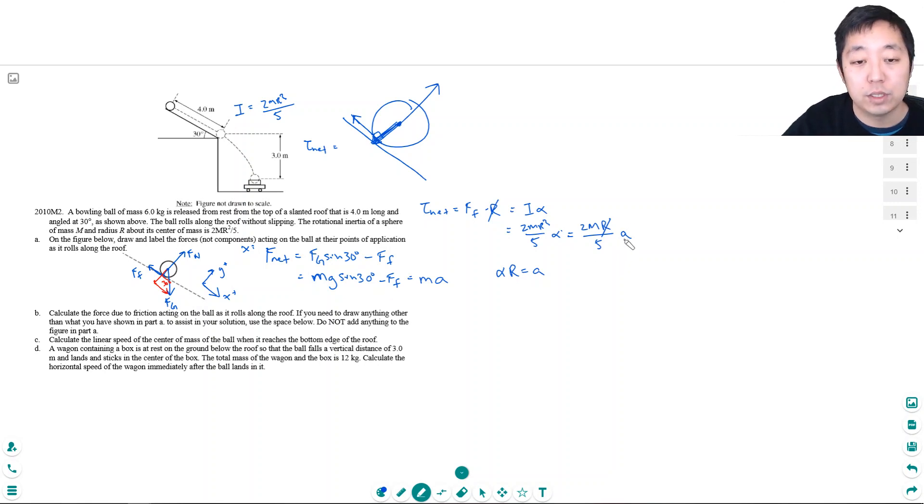A is equal to 5 halves force of friction divided by M. And I'm going to plug that into here and then solve for the force of friction. So, sine of 30 degrees is 1 half. So, 1 half mg minus the force of friction is equal to 5 halves force of friction divided by M. Wait, why don't I divide it by M? Oh, actually the M times M. That's the acceleration times M. The M's cancel. So, I get 1 half mg is equal to 1 plus 5 halves. That's 7 halves force of friction. The 2's cancel. And so, force of friction is equal to 1 seventh of mg.